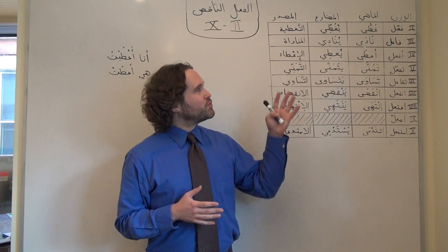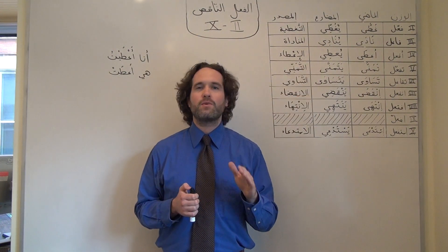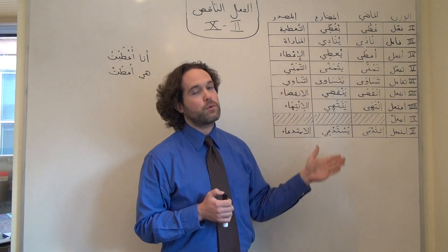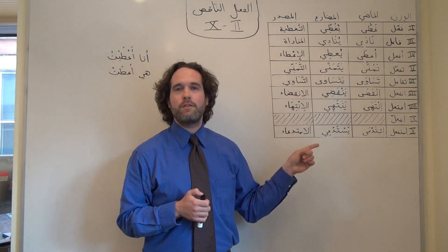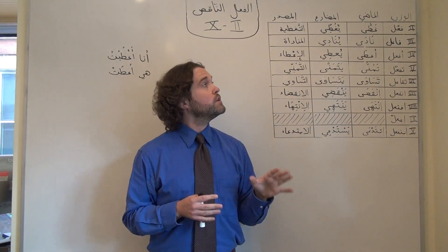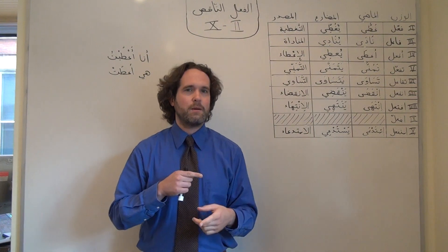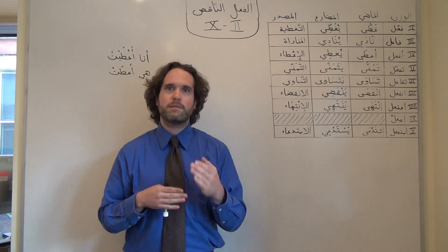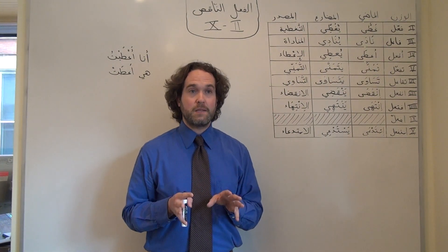The great thing about the derived patterns of الفعل الناقص is that they are very, very regular. If we know how one verb works in a derived pattern with الفعل الناقص, we can know how any other verb in that وزن is going to work. So unlike form one, الفعل الناقص, where we need to think about the relationship of various vowels and be able to predict what's going to happen, this is relatively simple.